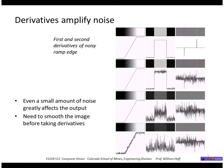One thing all edge operators deal with is noise — noise greatly compounds the problem of detecting edges, and even a small amount greatly affects the output. This first column is the original image of a ramp edge shown as a one-dimensional profile. Adding a very small amount of noise produces quite a bit of noise in the first derivative, to the point where it's almost unusable. The problem is even worse in the second derivative. So all practical edge operators have to smooth the image before taking the derivative.